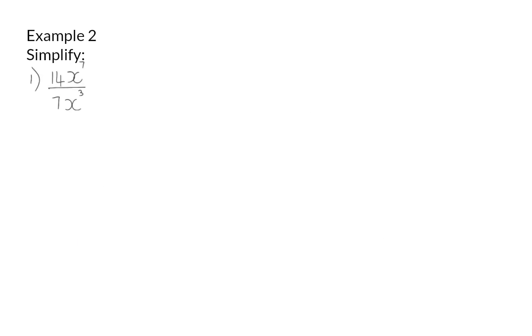In example 2, we now also have variables. The 14 and 7 are normal constants without exponents, so we can divide them as normal, saying 14 divided by 7 is 2. For the variables, we now have exponents, so I'm going to use my division law. This law says that the base number stays the same, and I subtract the exponent, so 7 minus 3 will give me 4.